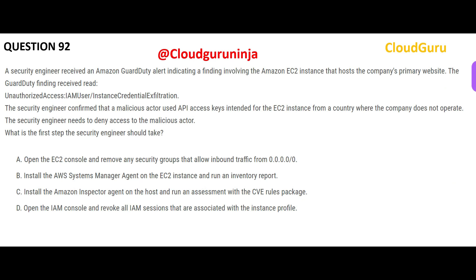The next question describes a malicious attack attempt that was caught by GuardDuty. The thief was from a country where the company does not operate. The security engineer needs to deny access to the malicious actor. Option A is wrong because it says to go to the security group and remove access — we don't know that it had open access to the internet. Option B says to put the Systems Manager agent on EC2 and run an inventory report — that tells you about node utilization, not about hacks.